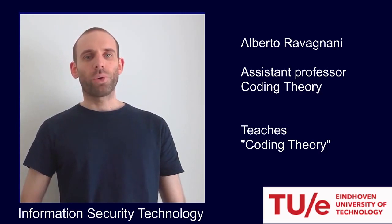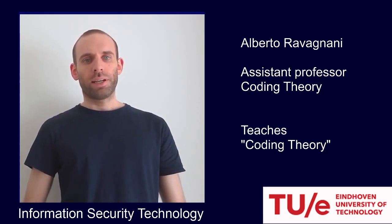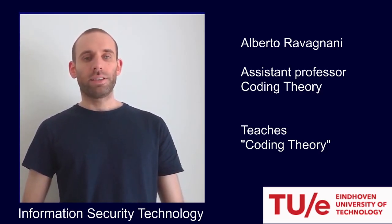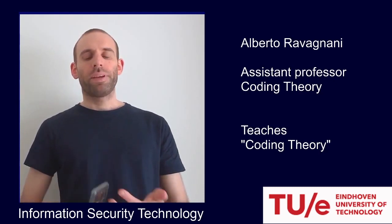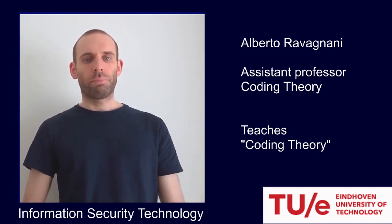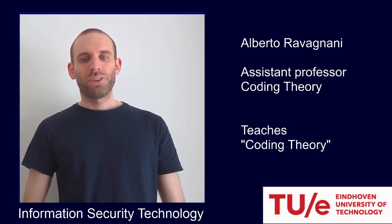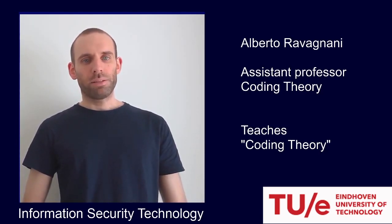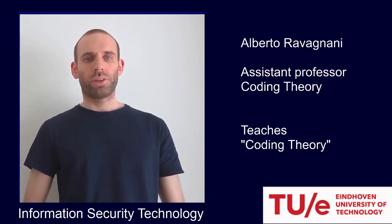For example, when you scan a QR code with your phone, or when we receive a picture of a planet from a space probe, data is typically corrupted. In the example of the QR code and the smartphone, this can be due to impurities on your camera, and in the example of the picture of the planet, this is typically due to electromagnetic interference. So what we need is a mechanism in place in order to correct errors over a noisy digital channel, and that's precisely what coding theory is about.